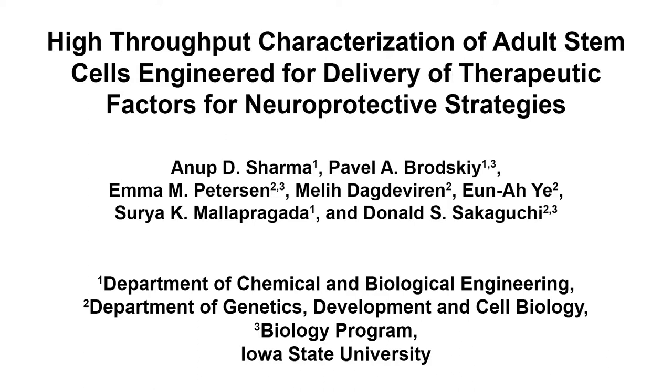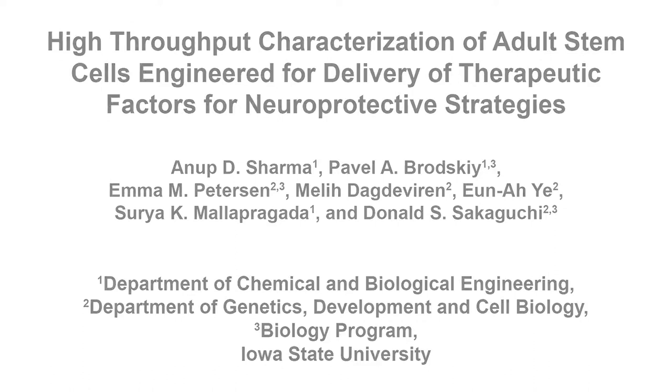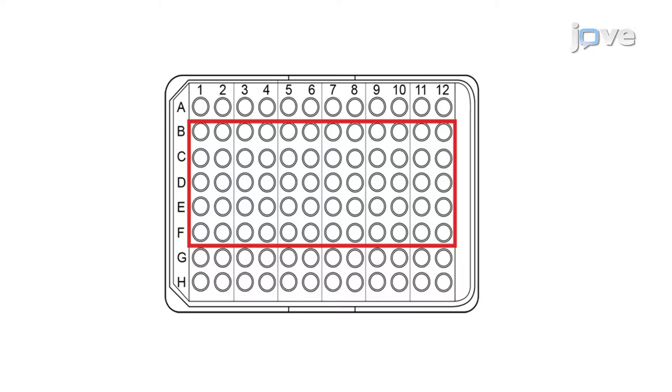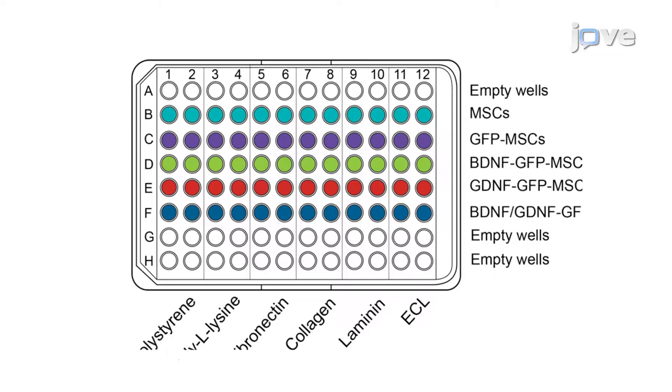The overall goal of this procedure is to rapidly characterize genetically engineered stem cells using a high-content screening, or HCS, system. This is accomplished by first designing and preparing experiments for a 96-well plate, and then plating the different populations of engineered stem cells.